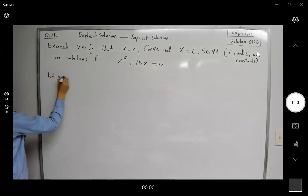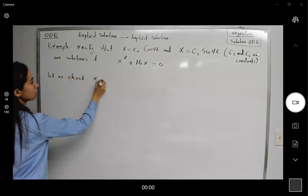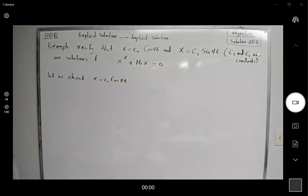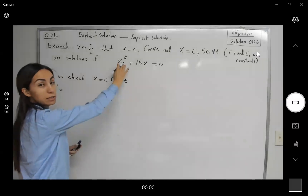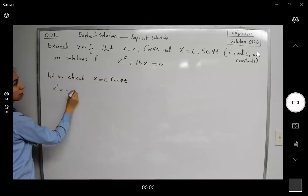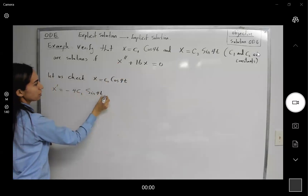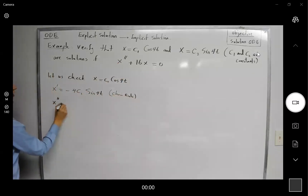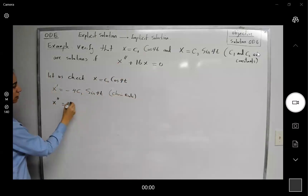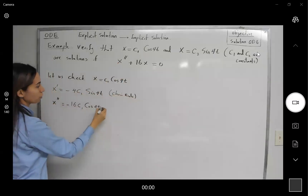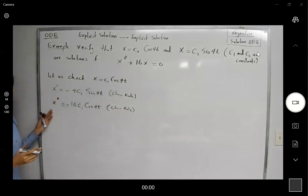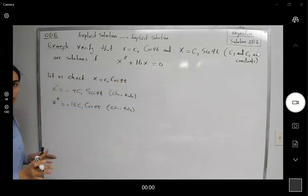Let us check x equals C sub 1 cosine of 4t. Remember, we need the second derivative of x. The first derivative is equal to negative 4C₁ sine of 4t, using the chain rule. And the second derivative is equal to negative 16C₁ cosine of 4t — another chain rule application. Now substitute the second derivative into the left-hand side and show that it's equal to zero. That's how we verify.